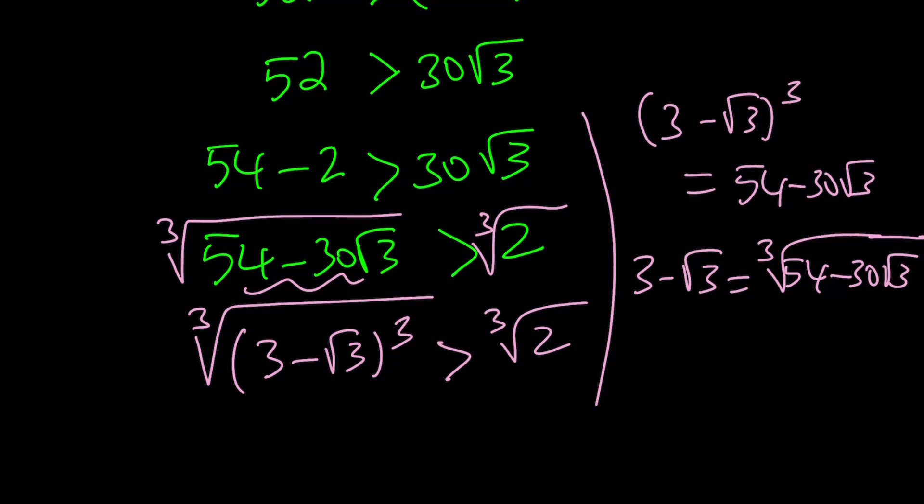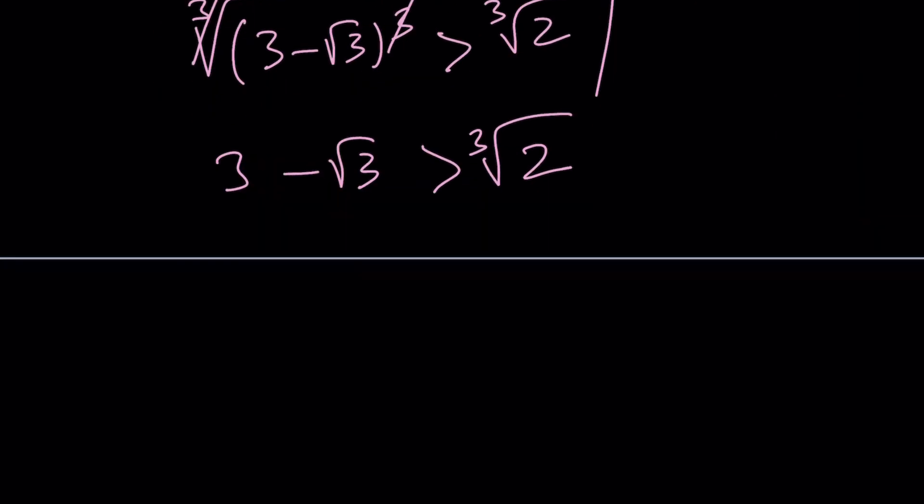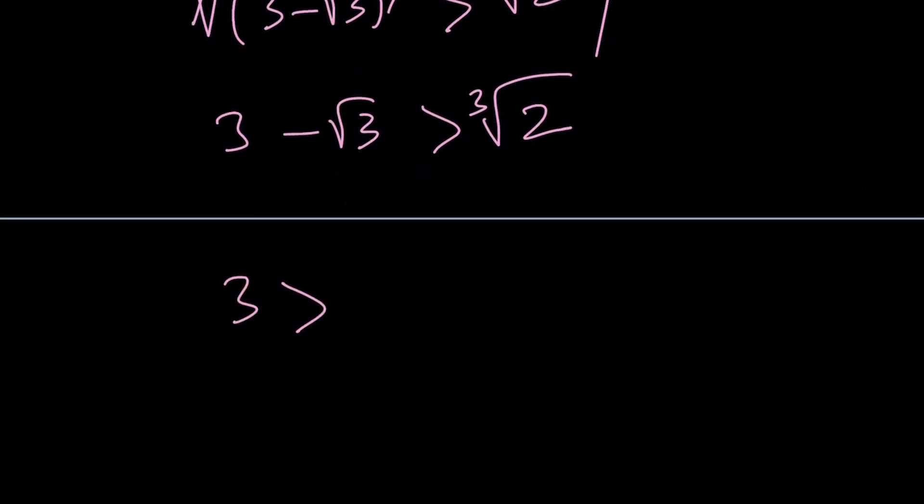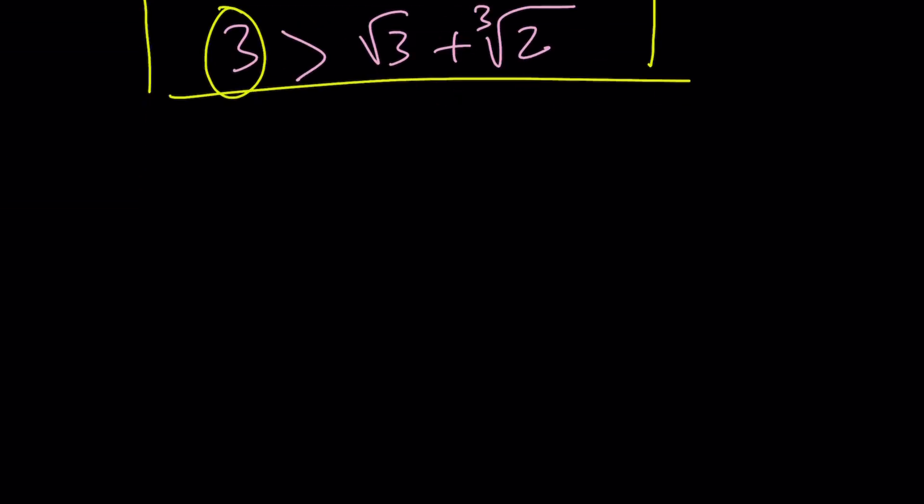Now, what are we going to do with this? We're cube rooting both sides and we cancel out. And we end up with 3 minus root 3 is greater than cube root of 2. What does that mean? It just means that 3 is greater than square root of 3 plus the cube root of 2, which is the number we were looking for. So we were trying to compare these two numbers and notice that 3 is the larger number. Make sense?